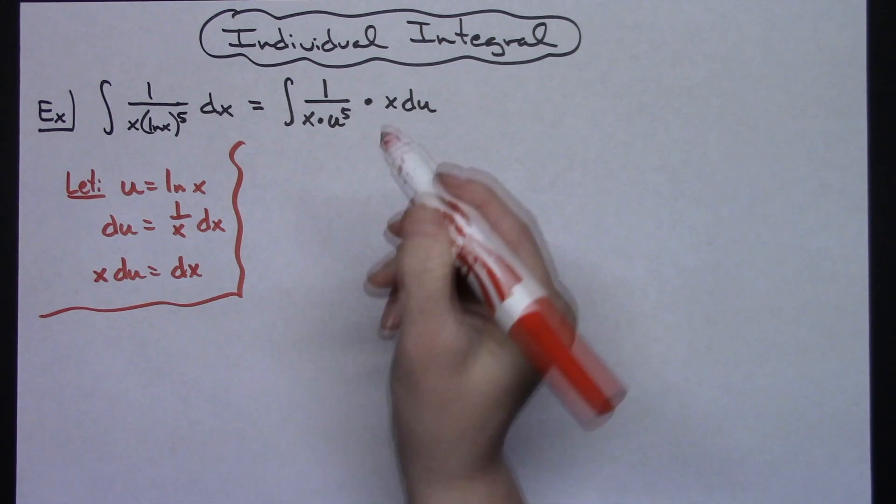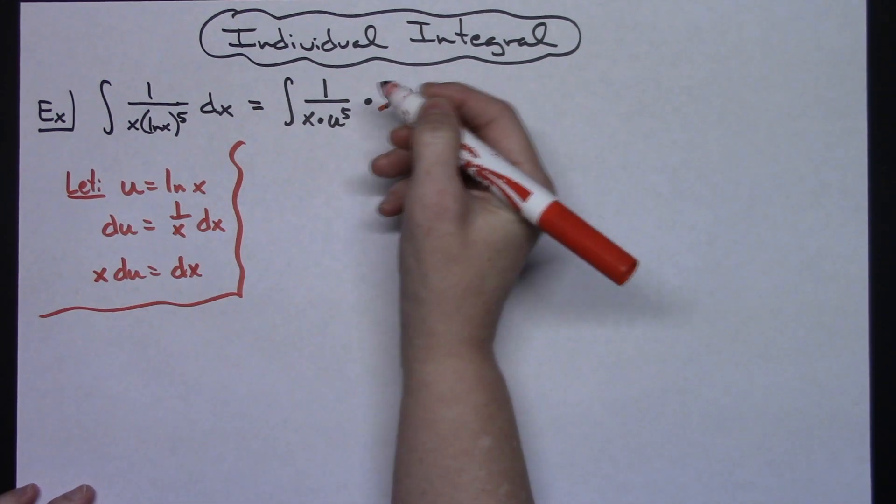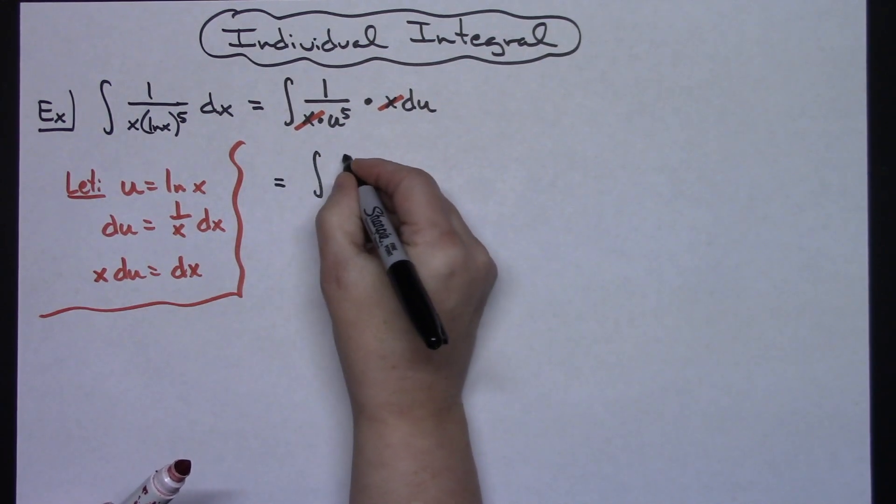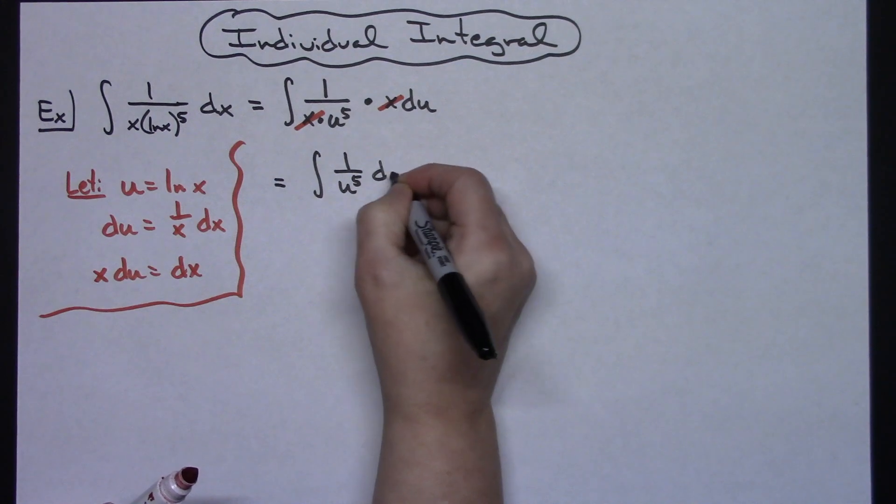That's going to allow me then to cross out the two x's. The x on top and the x on the bottom gets crossed out which will simplify down to the integral of 1 over u to the fifth du.